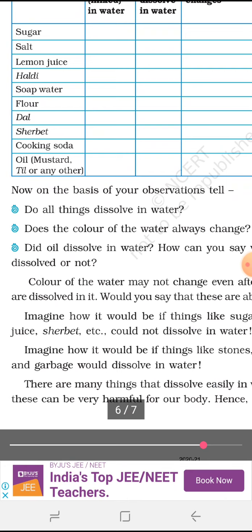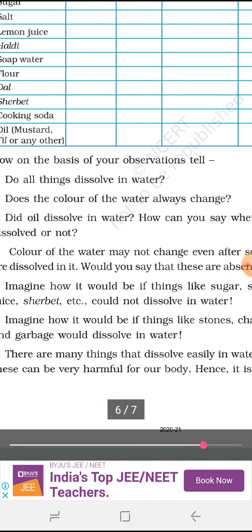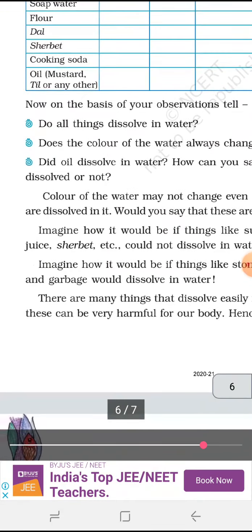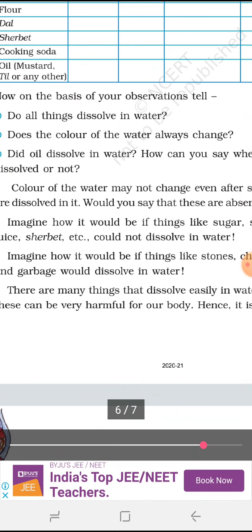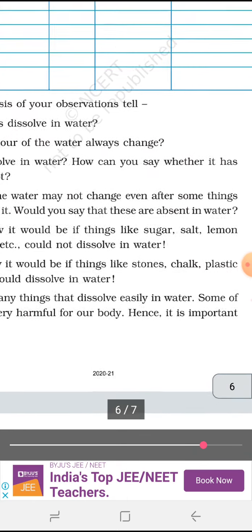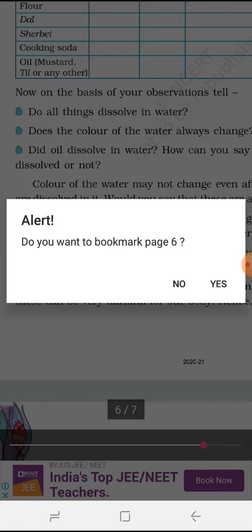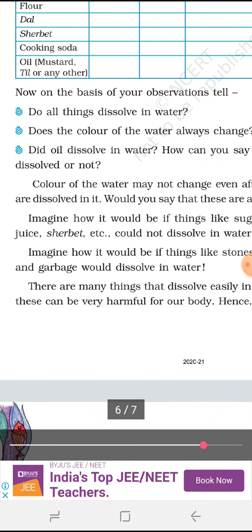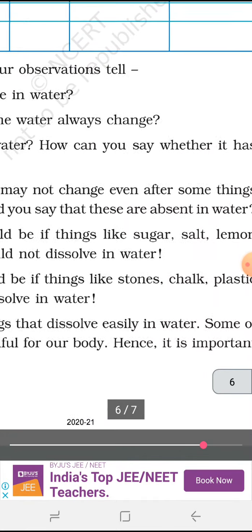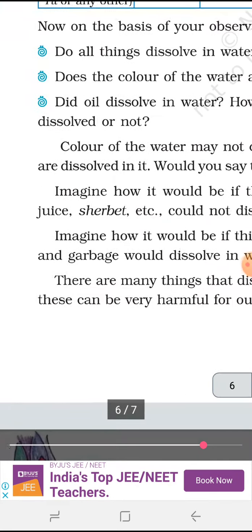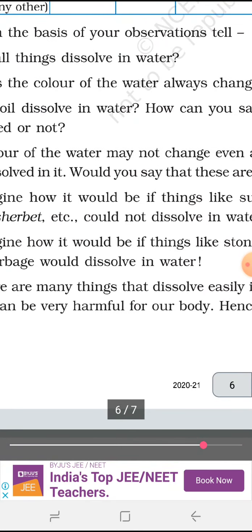On the basis of your observation, tell. Do all the things dissolve in water? No. Does the color of the water always change? No. Did oil dissolve in water? No. How can you say whether it has dissolved or not? Because we can see the oil particles on the surface of the water. It used to swim on the upper surface of the water. It never mingles. Imagine how it would be. Think like sugar, salt, lemon, juice, sherbet, etc. Imagine how it would be if things like sugar, salt, lemon, juice, sherbet, etc. could not dissolve in water.